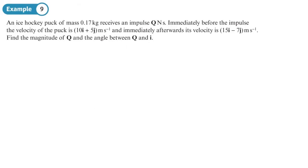An ice hockey puck of mass 0.17 kg receives an impulse of Q newton seconds. Immediately before the impulse we're given the velocity and immediately afterwards we're given its velocity. Find the magnitude of Q and the angle between Q and i. So this is going to be Pythagoras and the angle is going to be some sort of tan inverse. Make sure that we do our diagram to work out the correct angle.